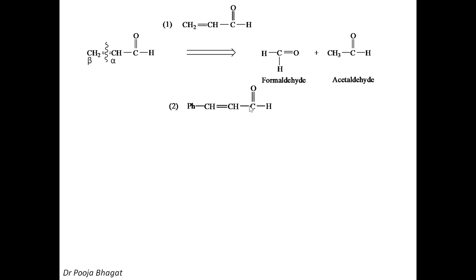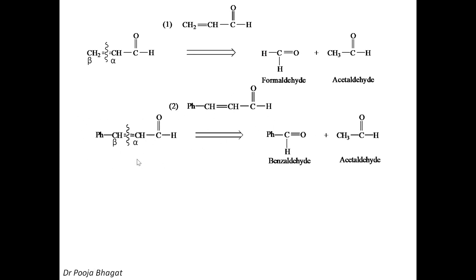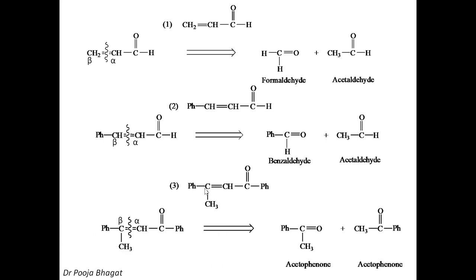Let us take one more example of an alpha-beta unsaturated aldehyde. If you have to synthesize it, do the alpha-beta cleavage. Oxygen comes here — so it is benzaldehyde. Two hydrogens come here — so it is acetaldehyde. The starting materials are benzaldehyde and acetaldehyde. For the last example: alpha carbon, beta carbon, cleavage — oxygen part gives Ph-CO-CH₃, that is acetophenone; two hydrogens come here — again CH₃CO-Ph, acetophenone. So it is the self-condensation product of acetophenone.